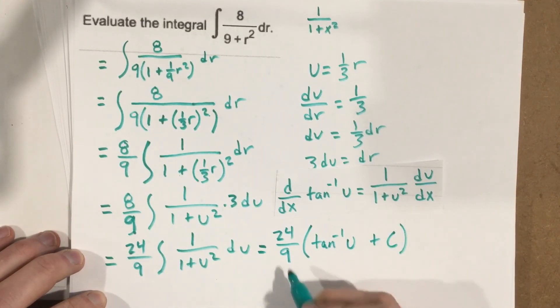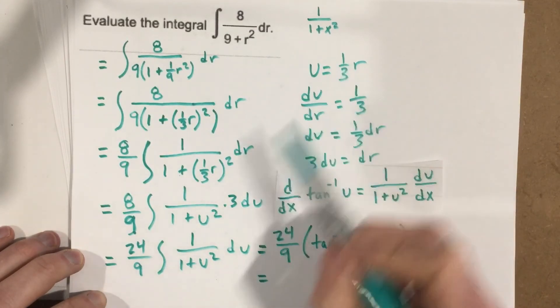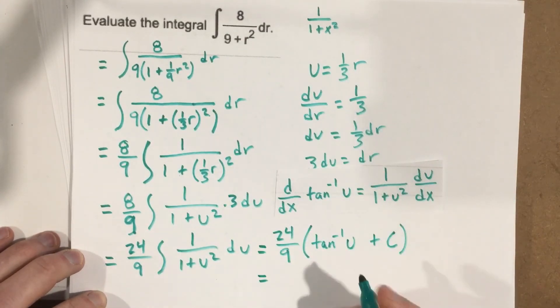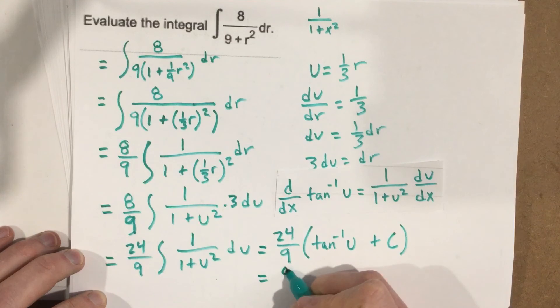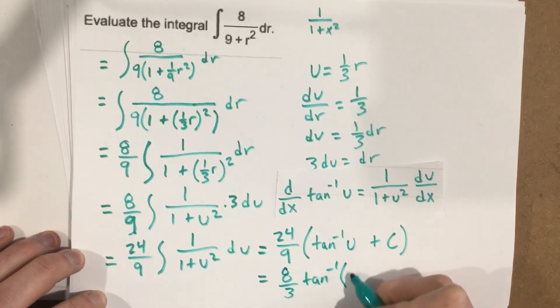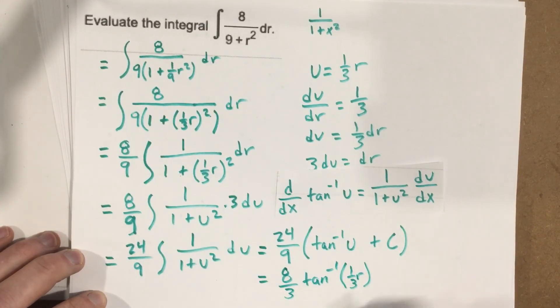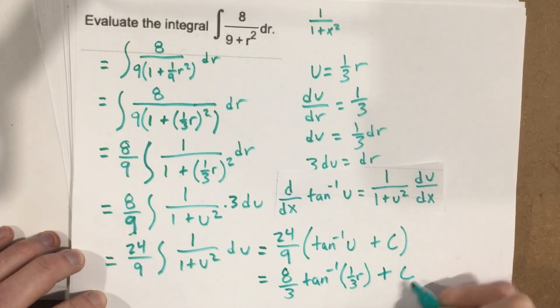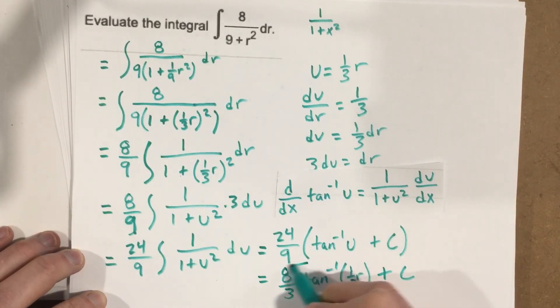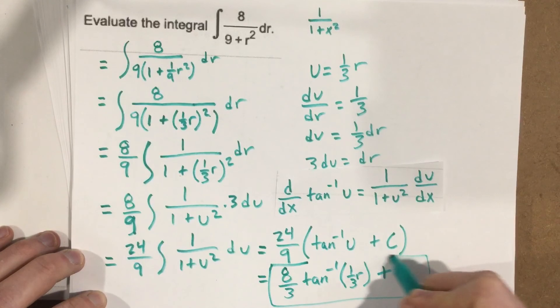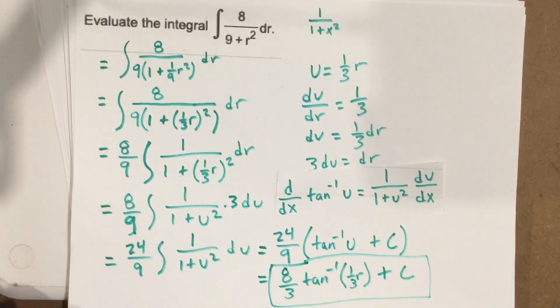My last step is to reduce and plug in u. Well, I know my u is 1 3rd r. So I'm going to plug in 24 over 9. If I divide that by 3, that will give me 8 3rds tangent inverse of 1 3rd r plus c. Because constant times constant is constant. And that's the integration.